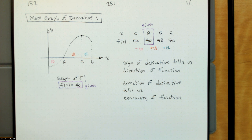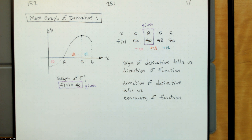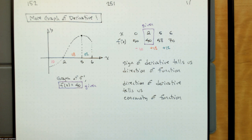This is all from our sequence of talks about what the derivative can tell us. We look at the function, the derivative, and the second derivative. We looked at the sign, direction, and concavity. The sign of the second derivative tells us about the concavity of the function.